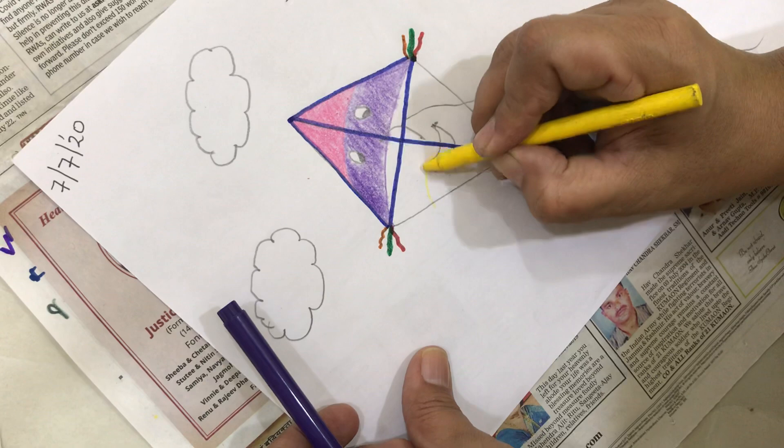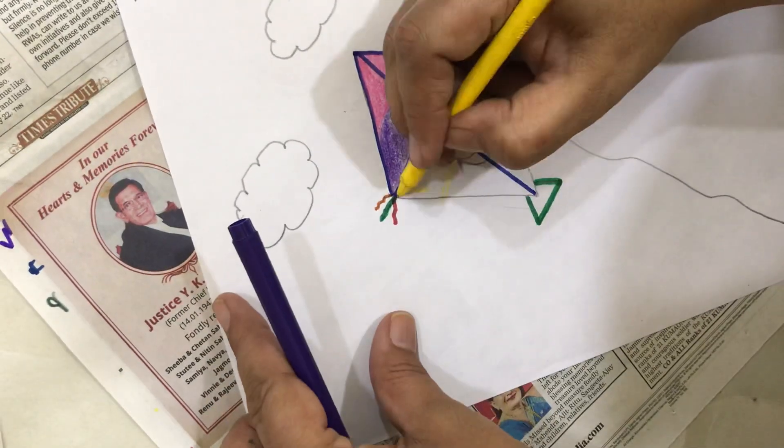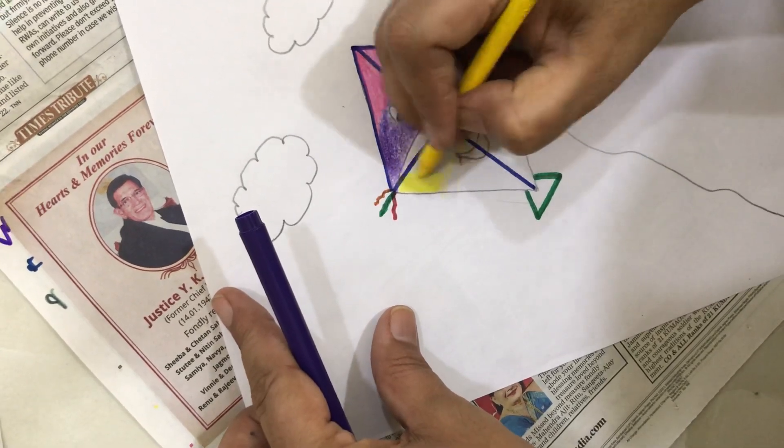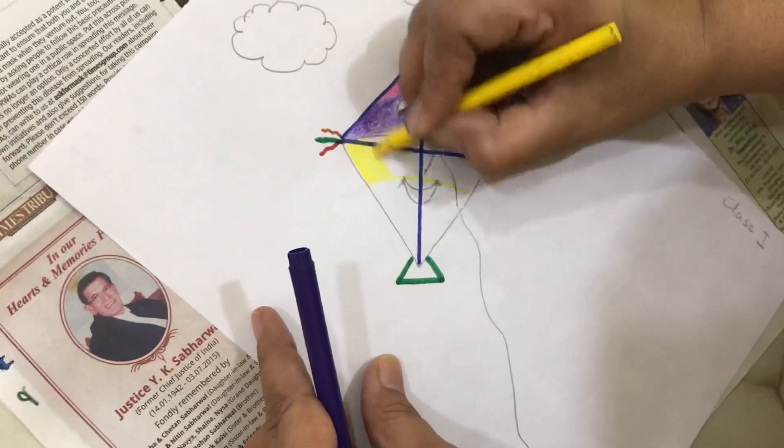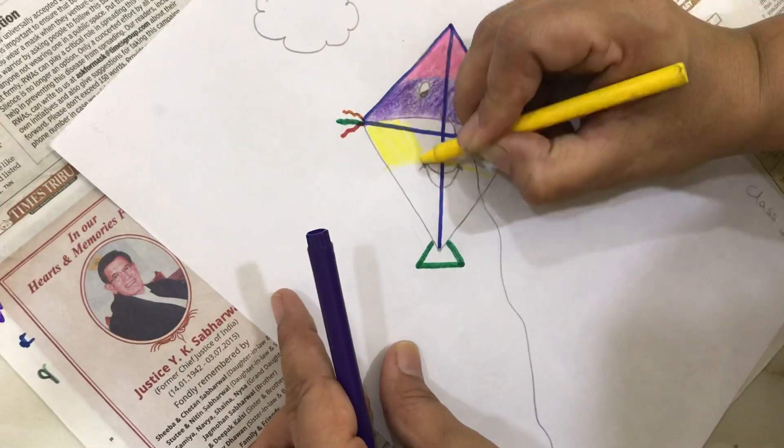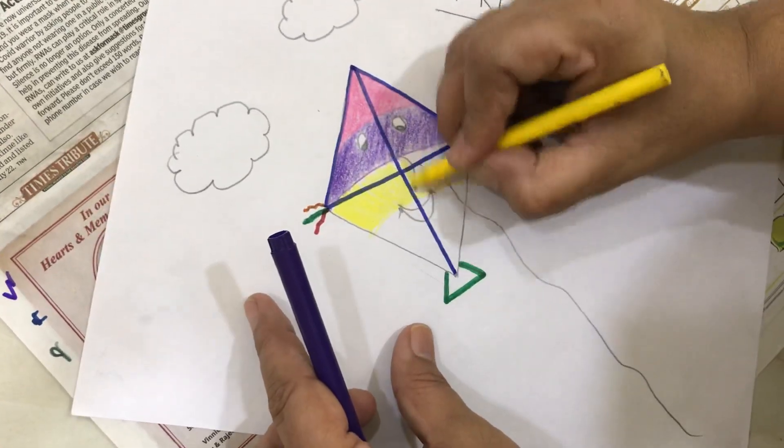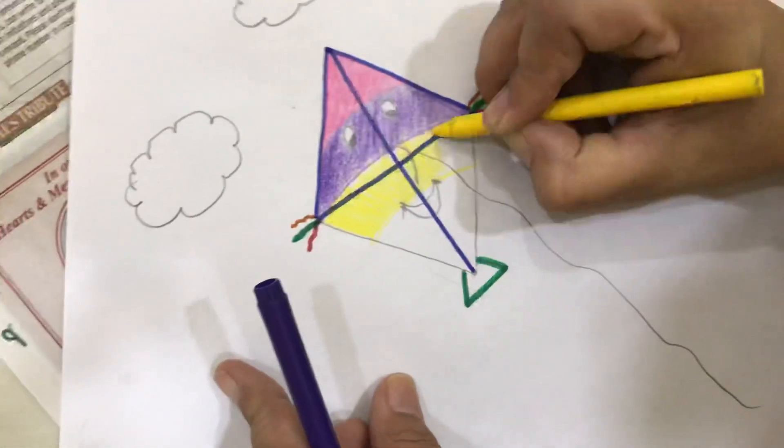And then maybe a lighter color. Because we've used a dark color, we can make a lighter color. I am just showing you that I have changed the direction of my coloring, but the way I am coloring is the same. My colors are not going out and we are doing it in one direction.